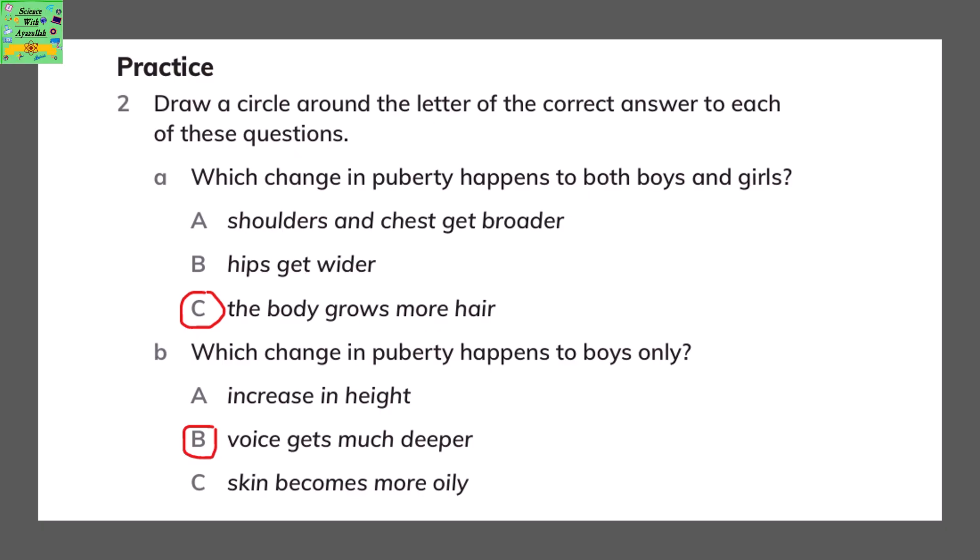Draw a circle around the letter of the correct answer to each of these questions. The first question is: which change in puberty happens to both boys and girls? The first two options happen either in the boy or in the girl, but option C — the body grows more hair — is common in both boys and girls when they hit puberty.